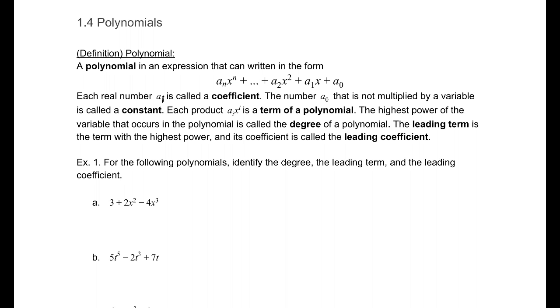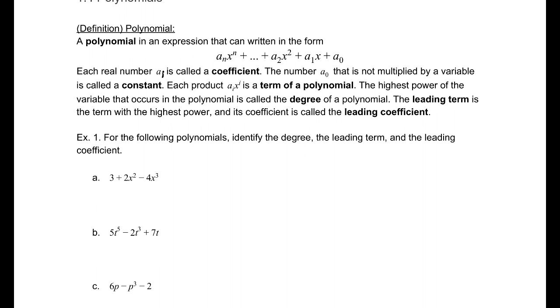So, let's go ahead and work with some polynomials. Identify the degree, the leading term, and the leading coefficient for each of these. We're going to begin by looking at finding the highest exponent. In this case, that is 3. So, the degree of this one is 3. That term that has that highest exponent, that is our leading term. So, negative 4x cubed. And then the leading coefficient is the coefficient on that.